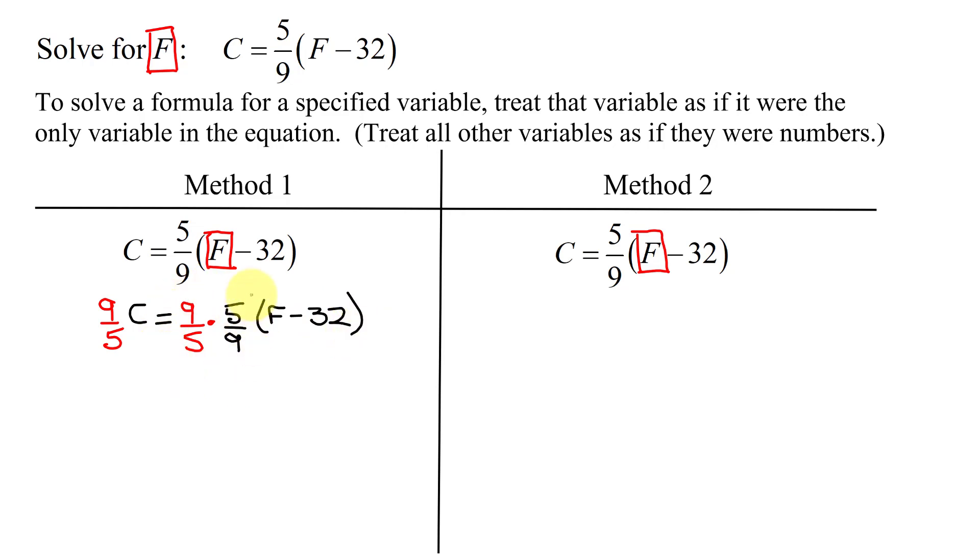Now I can simplify this. The 5s reduce, the 9s reduce, and I get 9 fifths C equals 1 times 1 is 1, divided by 1 times 1 is 1, 1 divided by 1 is 1, and 1 times this parentheses is just F minus 32.